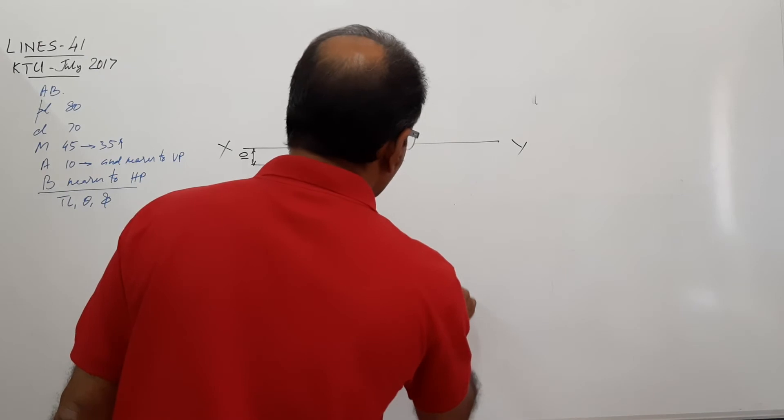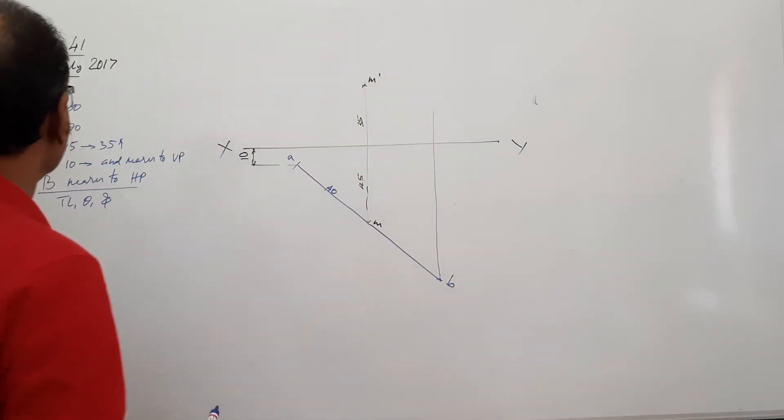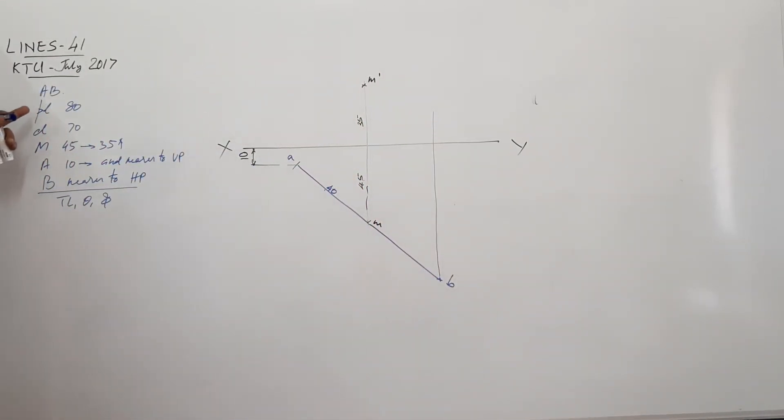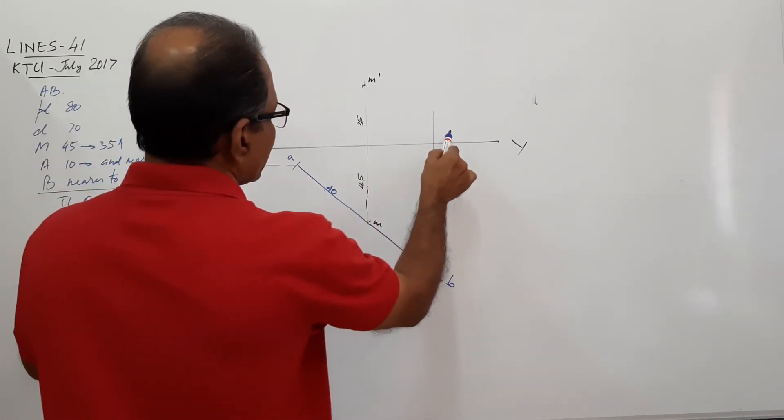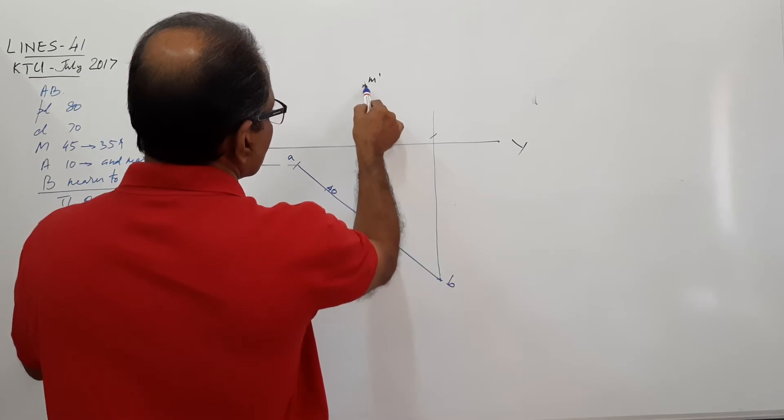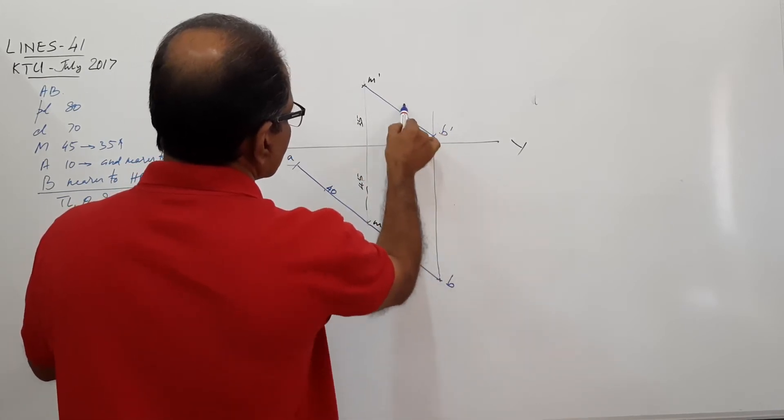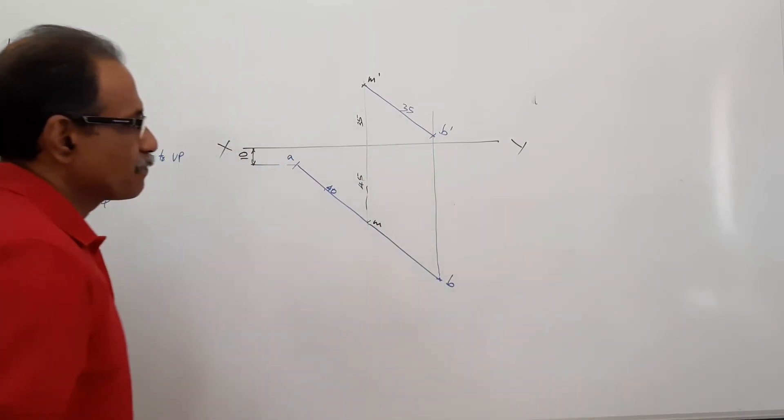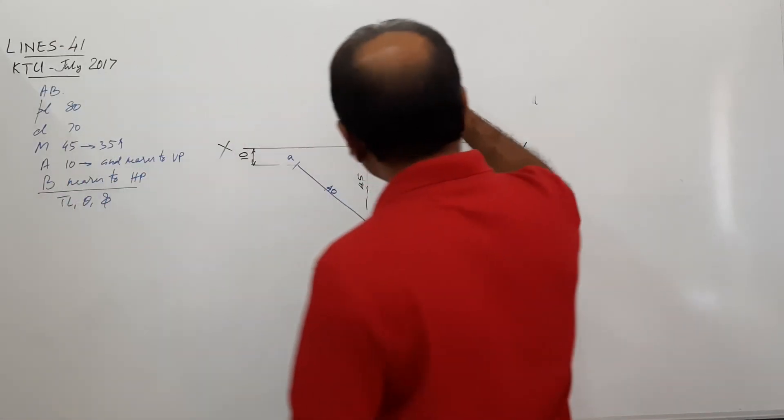M dash is the center. Elevation length 70, half. 35 as radius. Cut an arc. B dash. X is the same length in the opposite direction.